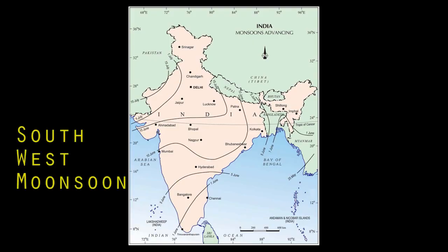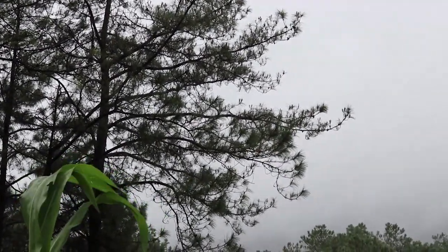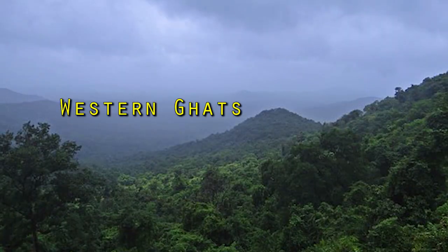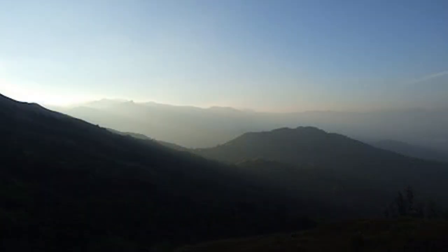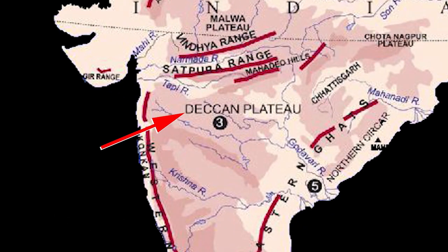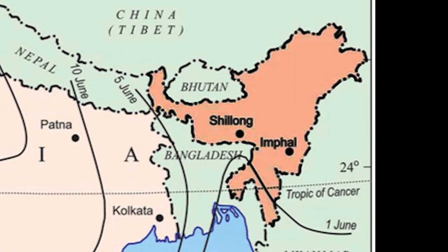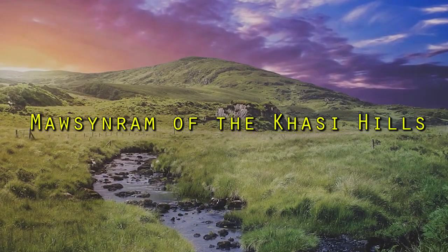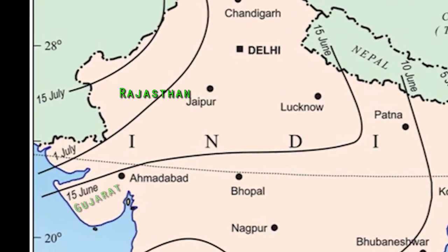The inflow of the southwest monsoon in India brings about a total change in the weather. In the early season, the western ghats receive very heavy rainfall, more than 250 cm. The Deccan Plateau and parts of Madhya Pradesh also receive some amount of rainfall in spite of lying in the rain shadow area. The northeastern part receives maximum rainfall in this season. Mawsynram of the Khasi Hills receives the highest average rainfall in the world. Rajasthan and parts of Gujarat get less rainfall.